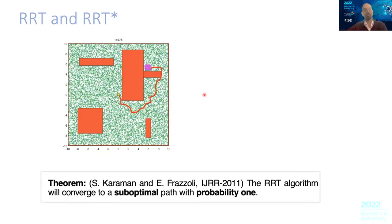However, as was shown back in 2011, this algorithm will converge to a suboptimal path in probability one, the reason being that there is no optimality here — you just explore. When you find a path, any path will do. That's not very good because in most cases we're looking for optimal paths.